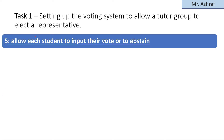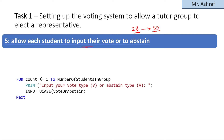At point number five of Task 1, we are setting up the voting system to allow a tutor group to elect a representative, and allow each student to input their vote or to abstain. As we know, each tutor group has a number of students ranging between 28 and 35 students, so we must ask every student in this group.